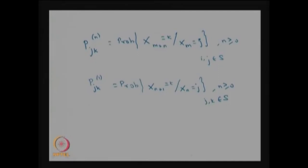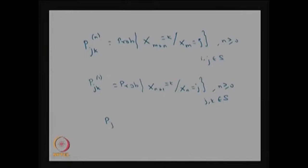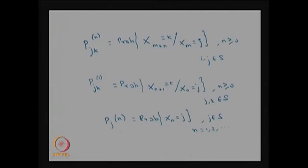Our interest is to find the distribution of X_m. Whenever the sequence of random variables X_m is a time homogenous DTMC, we want to find the distribution of X_n. It has a probability mass function p_j(n) — that is, the probability that the system will be in state j at the nth step — for j in S and n = 1, 2, 3, and so on.